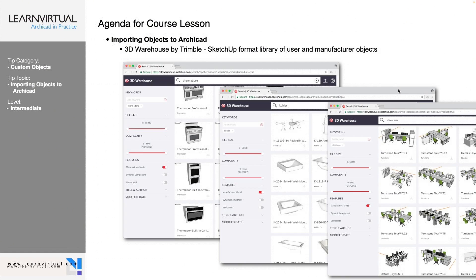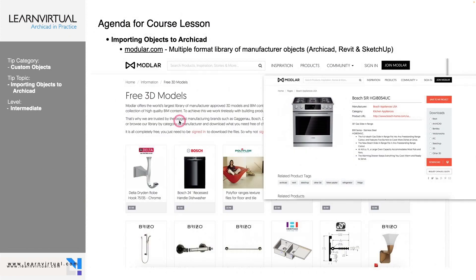The next one is the 3D Warehouse. This is a SketchUp format library — it has objects that have been built by SketchUp users, and all of those SketchUp objects are compatible with ARCHICAD. We bring them in as an SKP file and merge that into our embedded library. That's the 3D Warehouse, and it is a SketchUp formatted library.